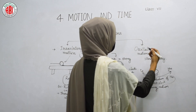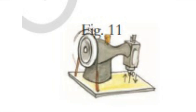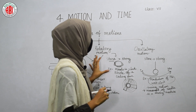One more example is the movement of a needle — when you observe the movement of a needle, it moves upwards and downwards. This upwards and downwards movement about a fixed point or along a line is also called oscillatory motion.